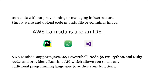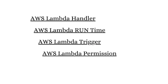Now let's understand the requirements for AWS Lambda. There are four requirements: the first one is the handler, the second one is the runtime environment, the third one is the trigger, and the fourth one is the permission. Let's discuss all four requirements step by step.